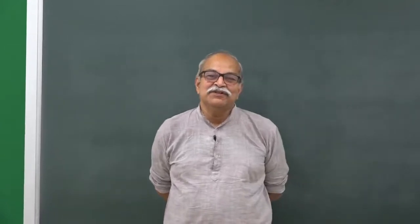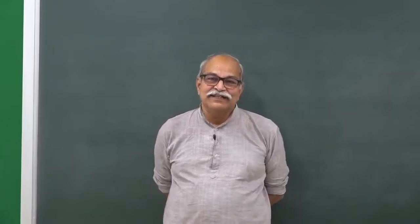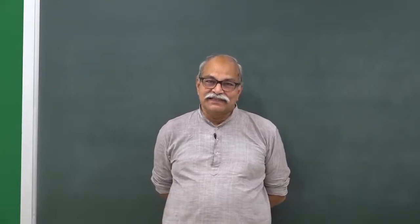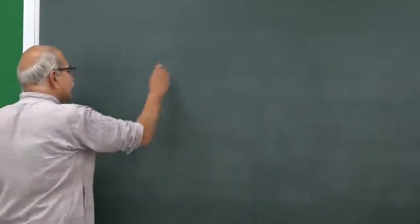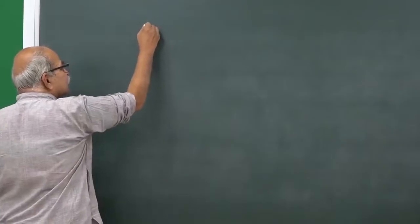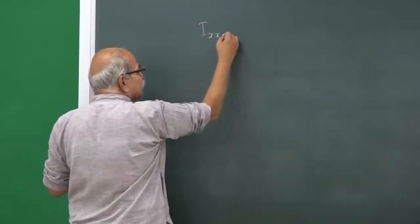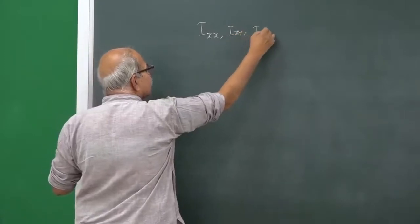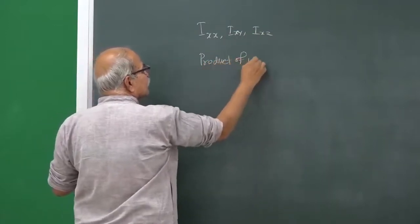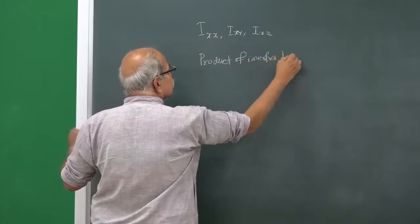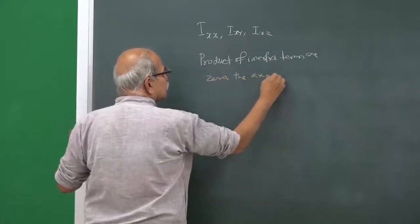This is a supplement to our week 8, lecture 3 — the 24th lecture — in which we discussed principal axes or principal directions of a rigid body. If you have x, y, z axes, you have product of inertia terms and principal moment of inertia terms: I_xx, I_xy, I_xz, and so on. If all these product of inertia terms are zero, the axes are principal axes.